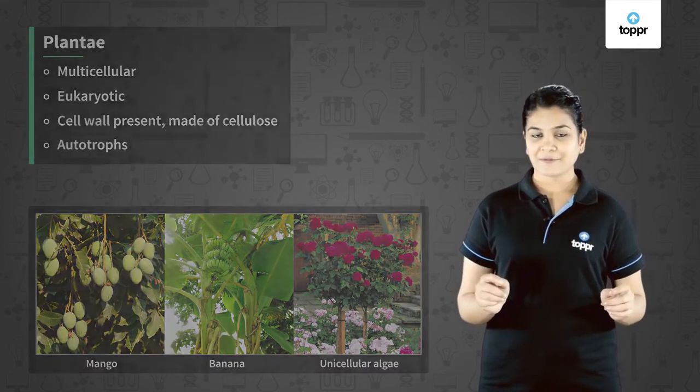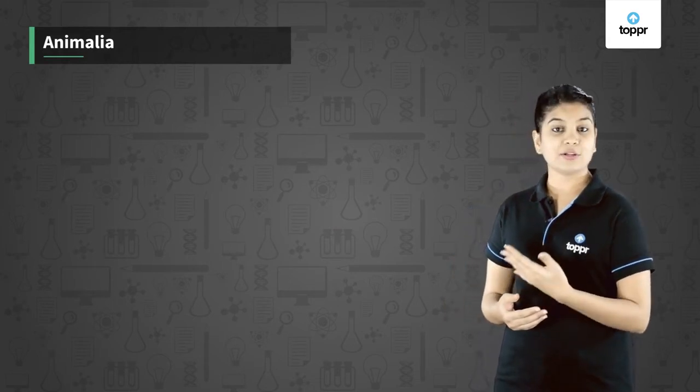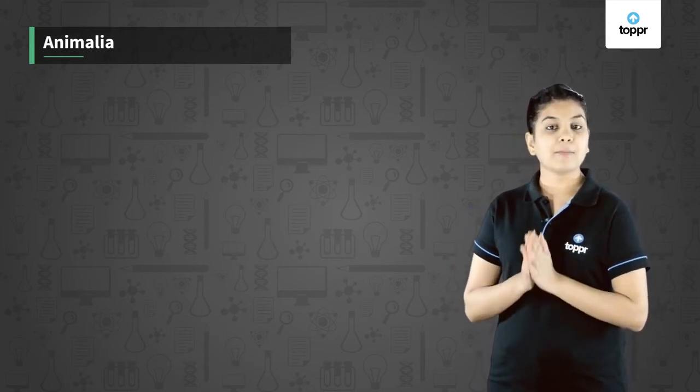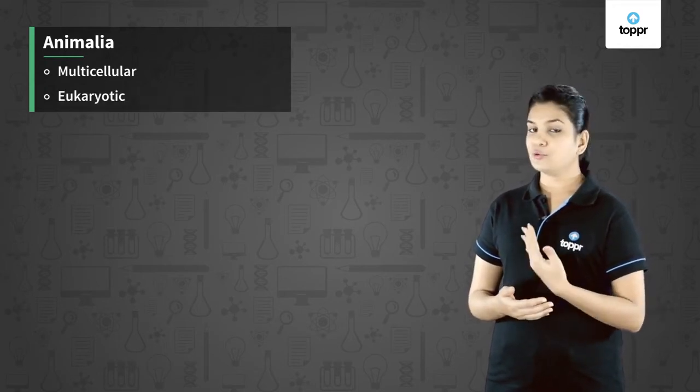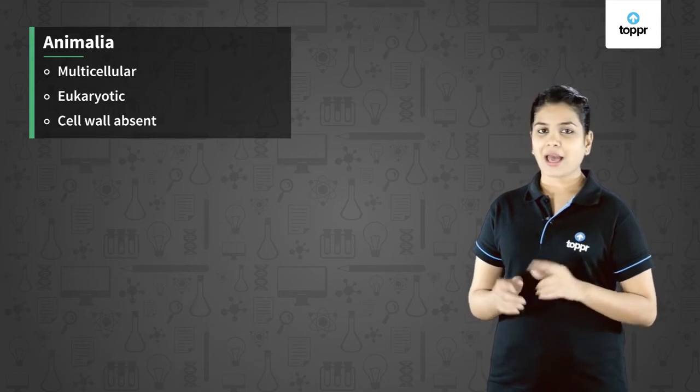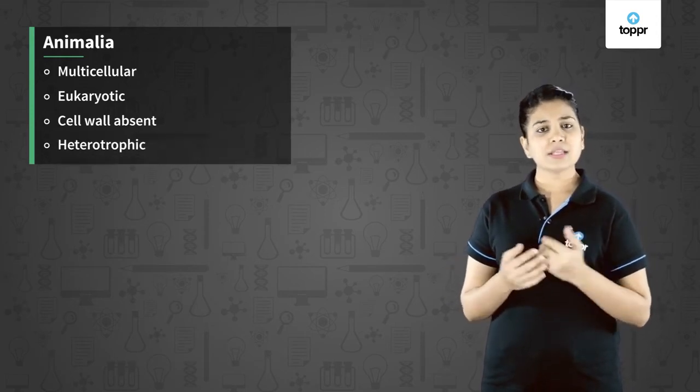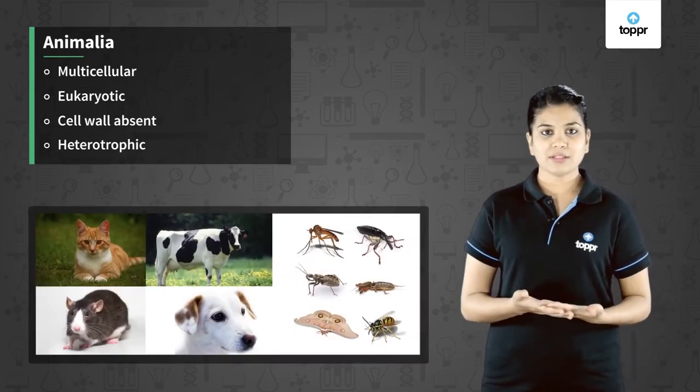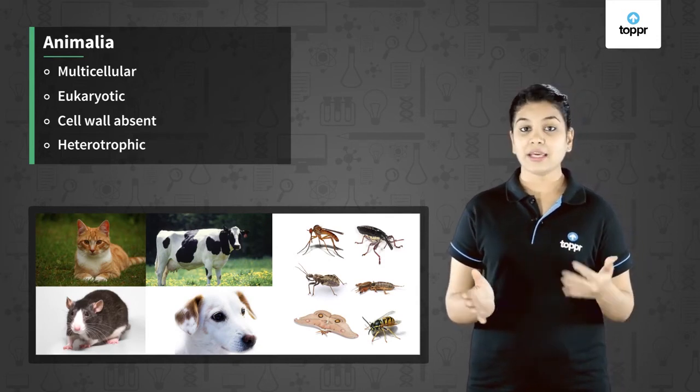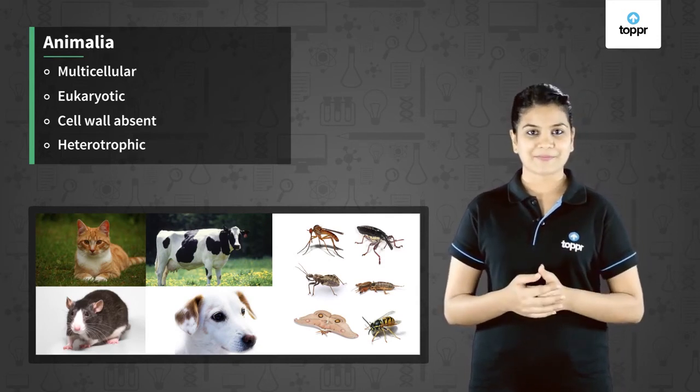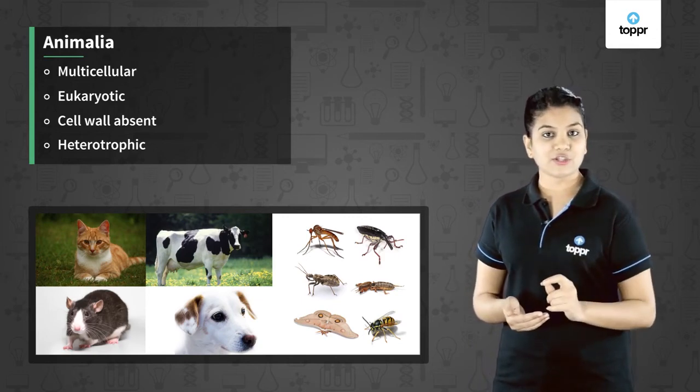Lastly we will see the kingdom Animalia. The organisms or animals are multicellular. They are eukaryotes as well. They do not possess a cell wall and their mode of nutrition is heterotrophic always. Some common examples of animals are dog, cat, cow, rat and many other insects as well. So this was about the five kingdom classification of Whittaker.